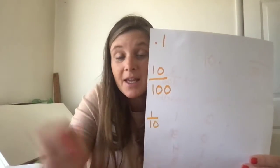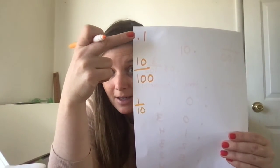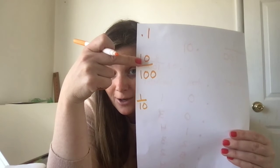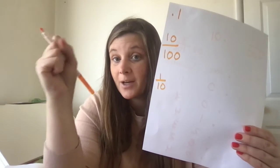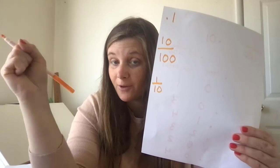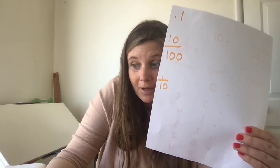So on your next index card, can you write one-tenth? Now these all mean the same thing, right? Point one, 10 over 100, and one-tenth. So you have three index cards now, three different ones. Put those in a pile, those three, because they all mean the same thing.